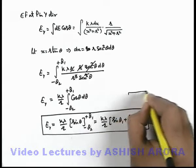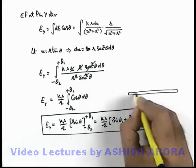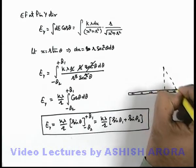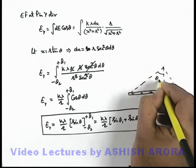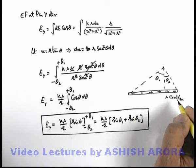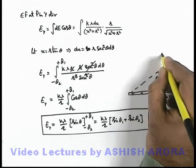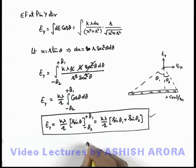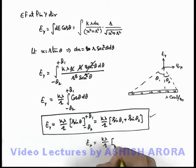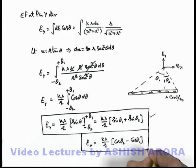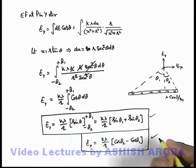Always remember these results. To understand once more: if there is a rod, and at any point P making angles theta₁ and theta₂ from the two ends of the rod, which has linear charge density lambda coulombs per meter, then the electric field has a y component and an x component. The y component is k·lambda divided by r times (sine(theta₁) plus sine(theta₂)), and the x component is k·lambda divided by r times (cosine(theta₂) minus cosine(theta₁)). Keep both of these results in mind for various kinds of numerical calculations.